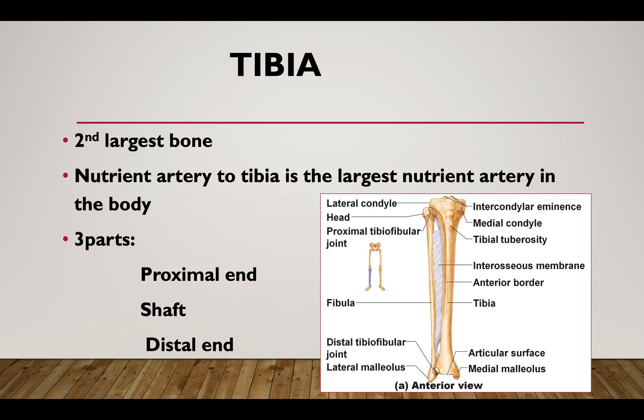Tibia — the second largest bone. The nutrient artery to the tibia is the largest nutrient artery in the body. It has three parts: proximal end, shaft, and distal end.